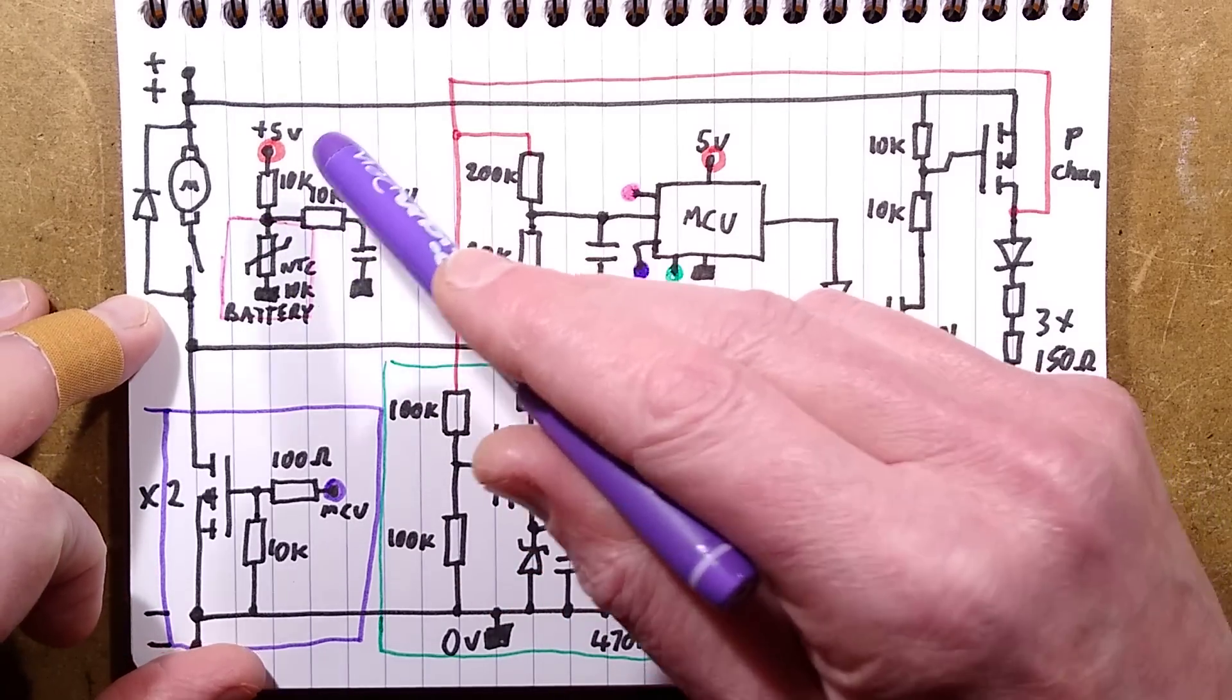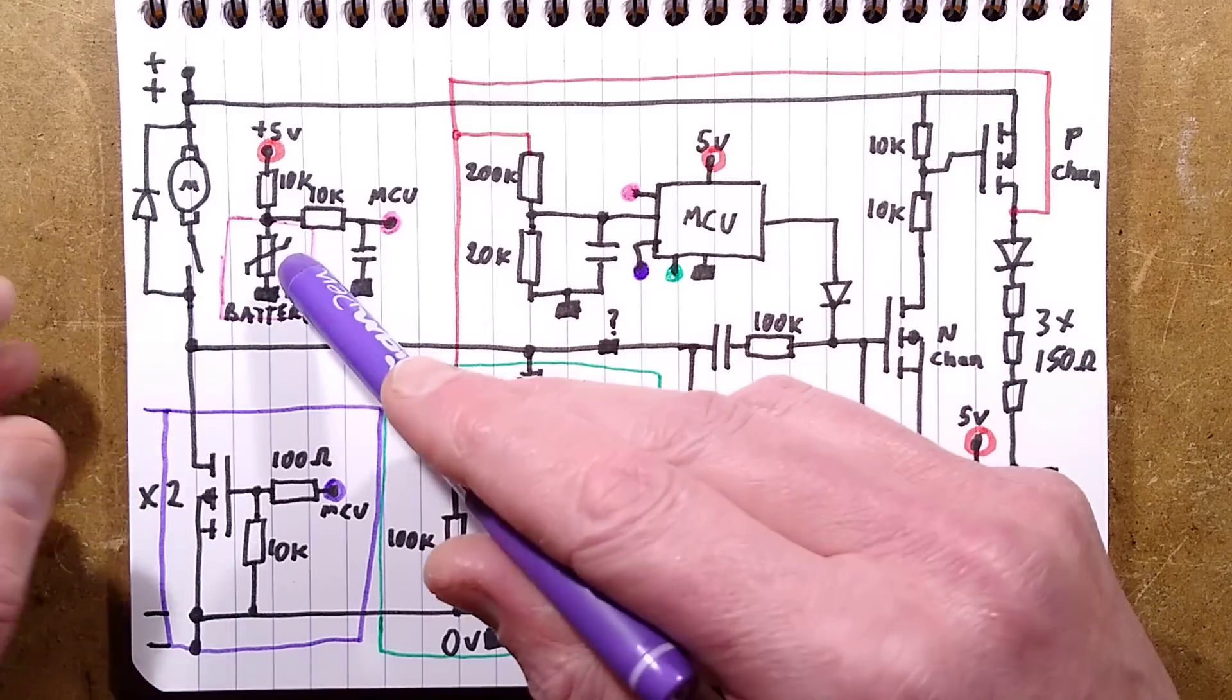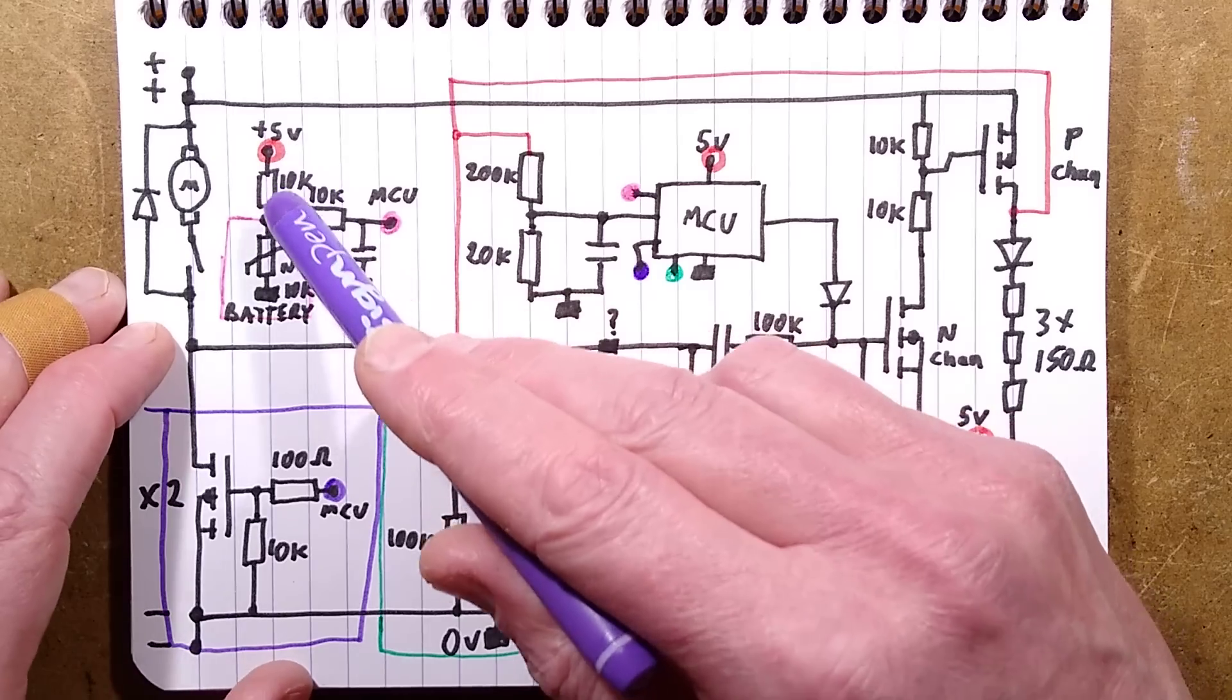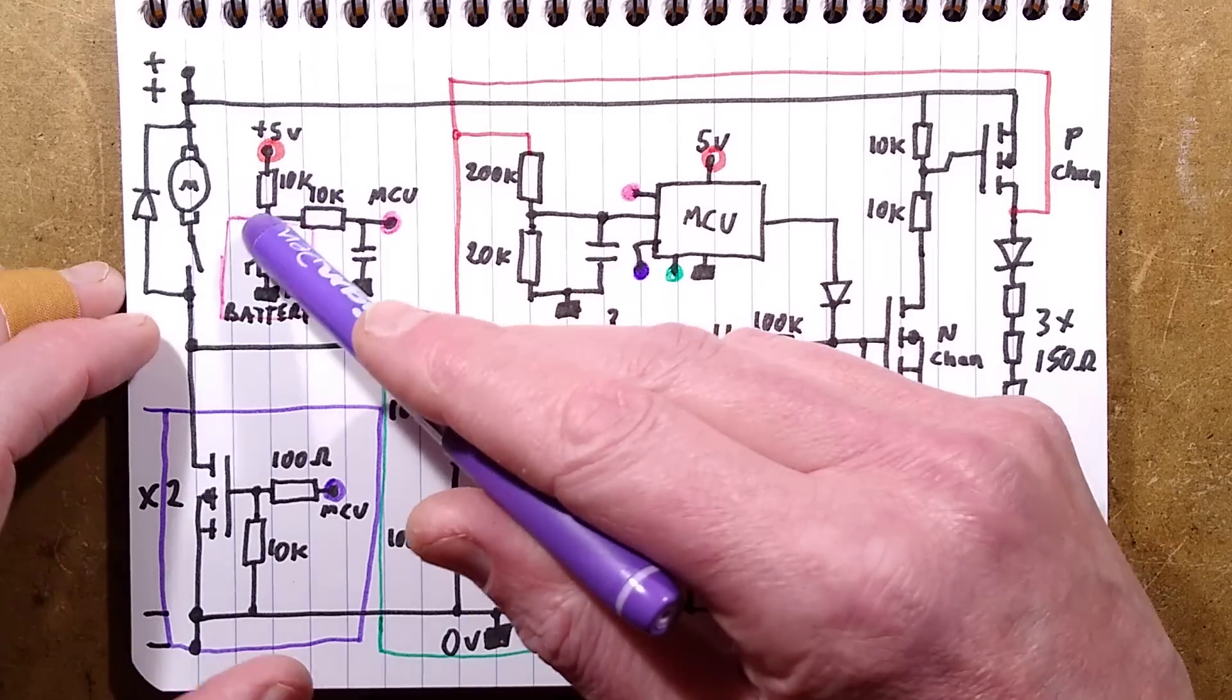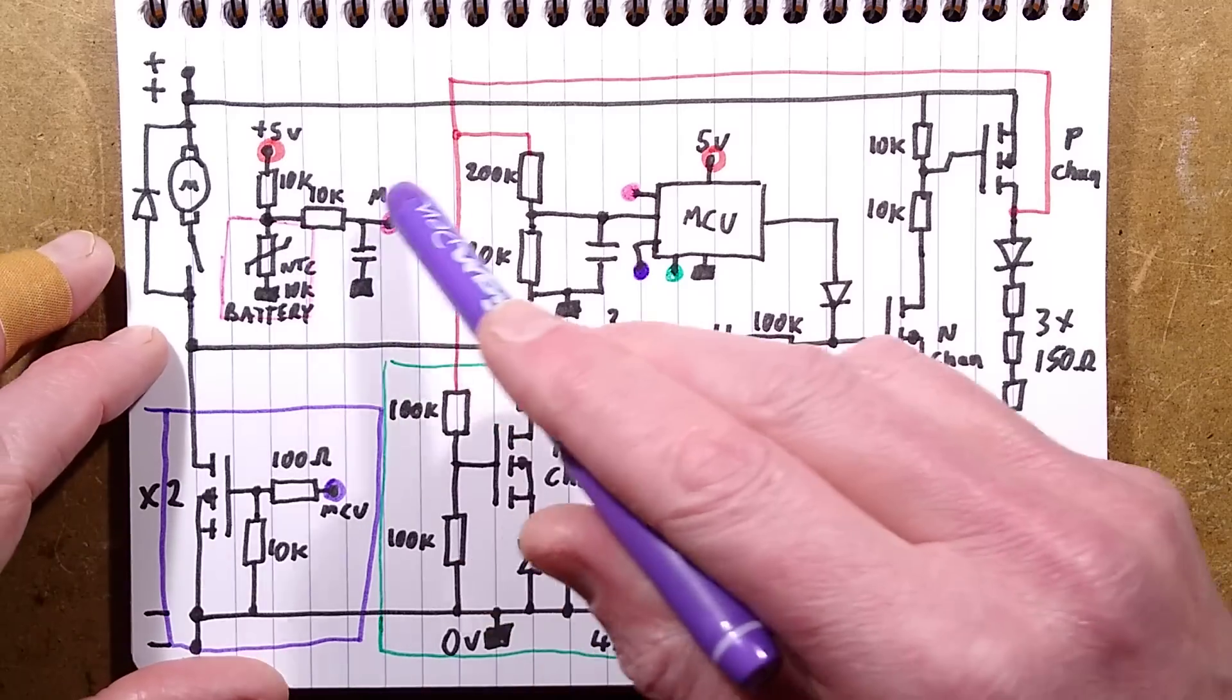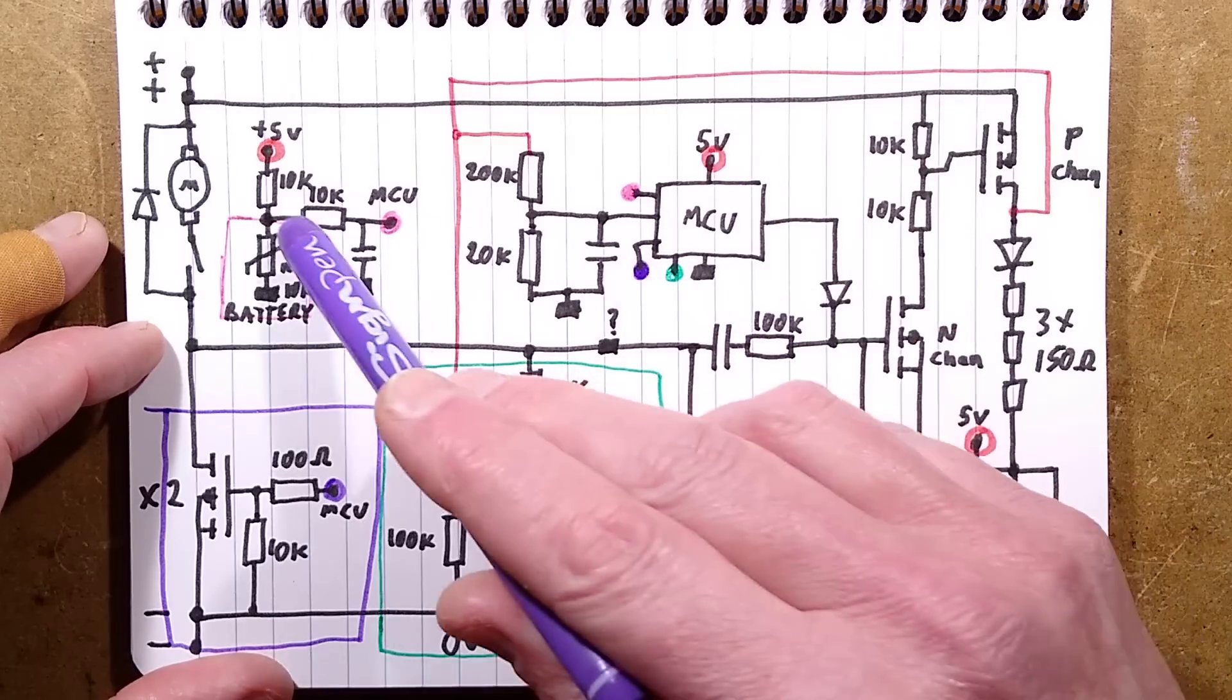If it allows it to float high, that means the battery is flat, or it might be an out of range level. The battery might be too hot or too cold, and that will signal to the processor not to actually start the tool. But if everything's okay, it will then provide on this purple pin a signal.